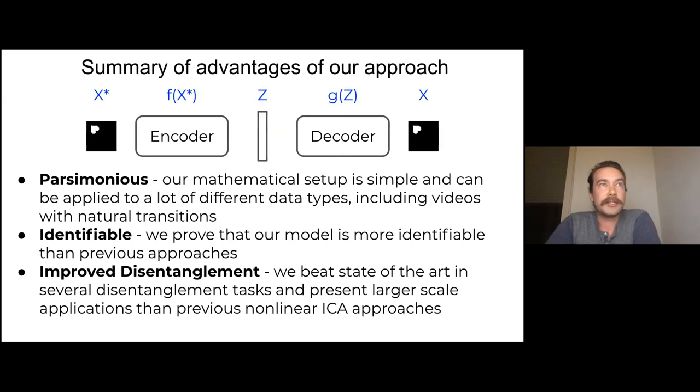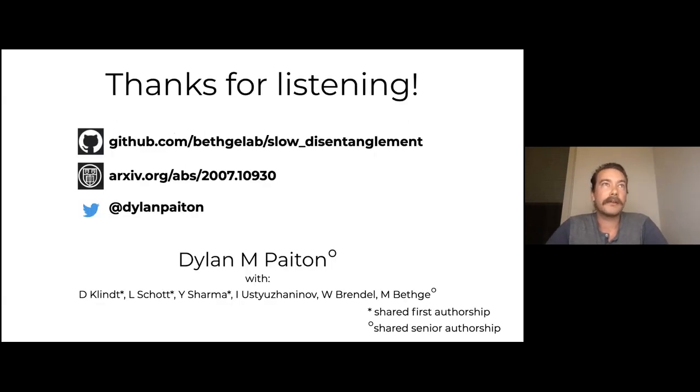So the summary of some advantages to our approach, it's parsimonious. So our mathematical setup is simple. It can be applied to a lot of different data types, including videos with natural transitions. It's identifiable, so we prove that our model is more identifiable than previous approaches. By more, I mean we have fewer constraints. It's applicable to a broader set of data. And it's identifiable up to permutations as opposed to up to something like a linear transformation, which previous approaches were. And then we also just empirically show improved disentanglement on these more constrained datasets. Ultimately, our goal is to move towards natural data. But we believe that we've offered these datasets as a way to help push the field in that direction. Yeah, and that's what I got. So this is the links that you can go to to check out more. Yeah, thanks a lot. Open to questions.